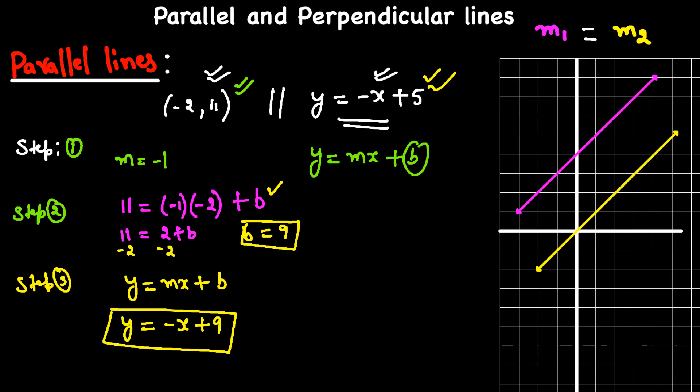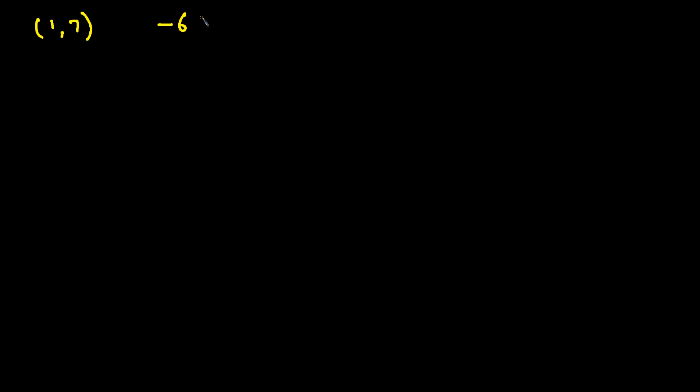Let's do one more example for parallel lines. We have a point (1, 7) and the line passes through this point and is parallel to the line -6x + y = -1. This looks a little different, so we're going to rewrite it in slope-intercept form. Our goal is to make this equation look like y = mx + b.